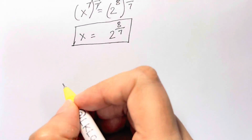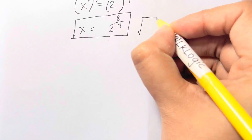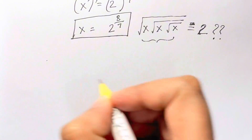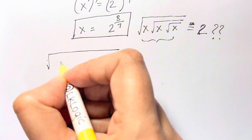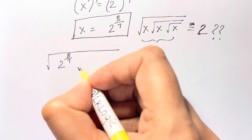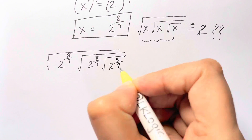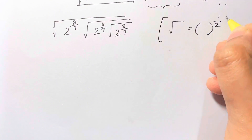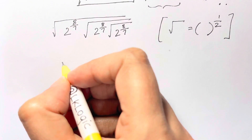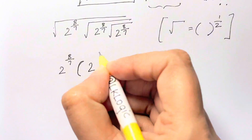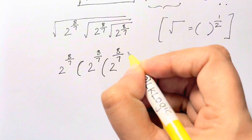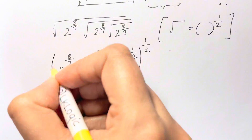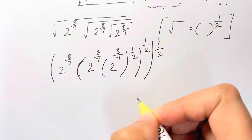Let's check if that is true — substitute into the equation and find out if it equals 2. We have the square root of 2^(8/7), root of 2^(8/7), root of 2^(8/7). The square root as an exponent is 1 over 2, so let's apply that: 2^(8/7) whole to the power of 1/2, whole to the power of 1/2. 2 times 4 is 8, so we have 2^(4/7) multiplied, whole to the power of 1/2.